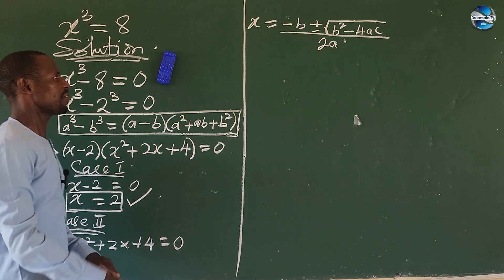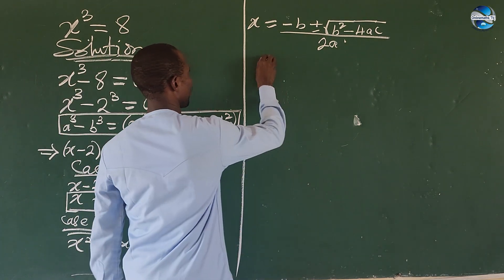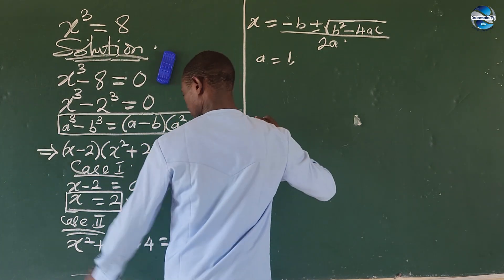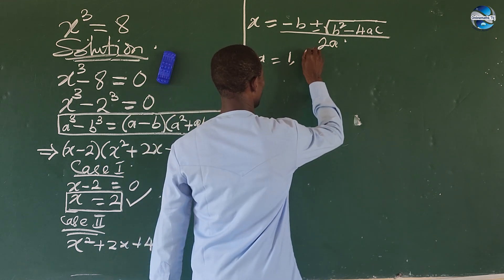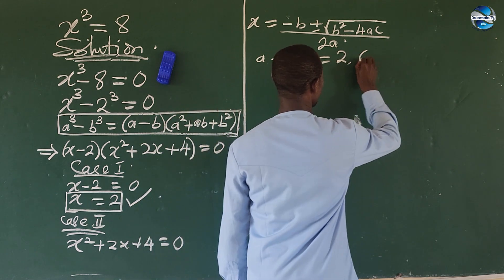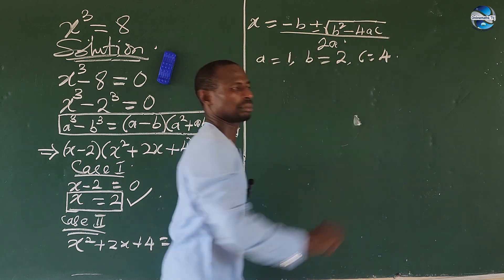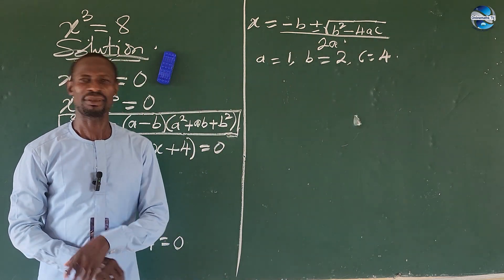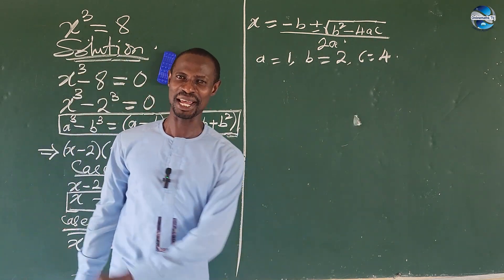So what is our a? It's the coefficient of x². So we have here a = 1. The coefficient of x is 2, which is our b. And the constant term, which is 4, c = 4. I told you it must make you happy this time around.